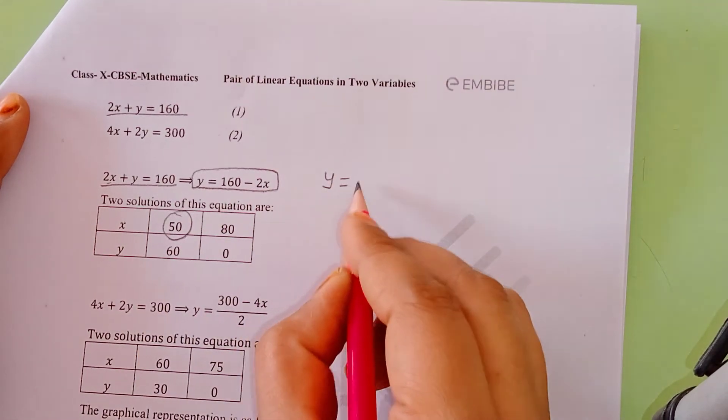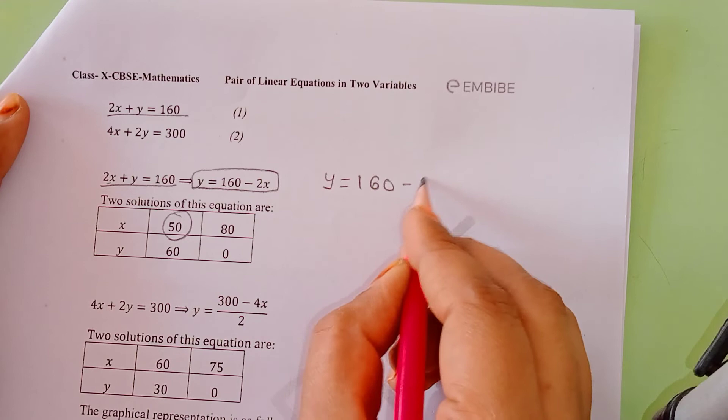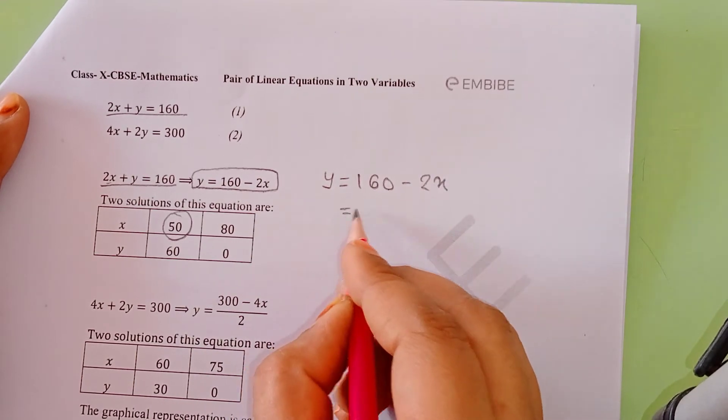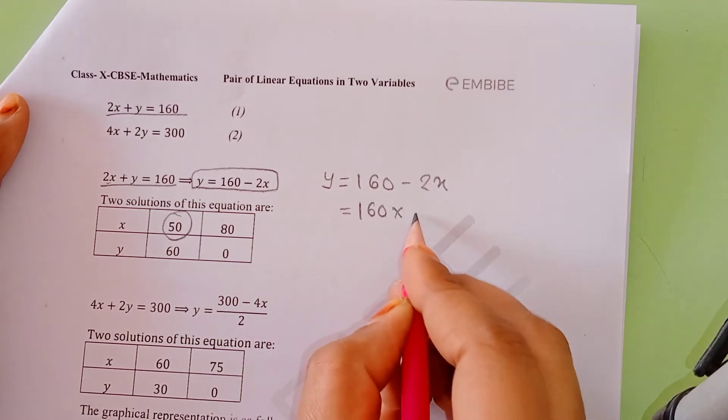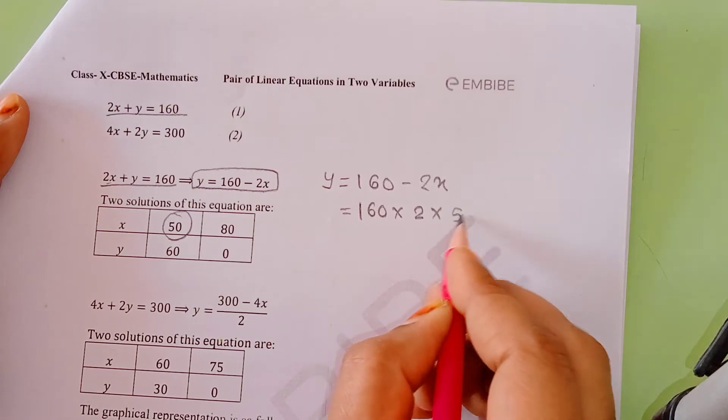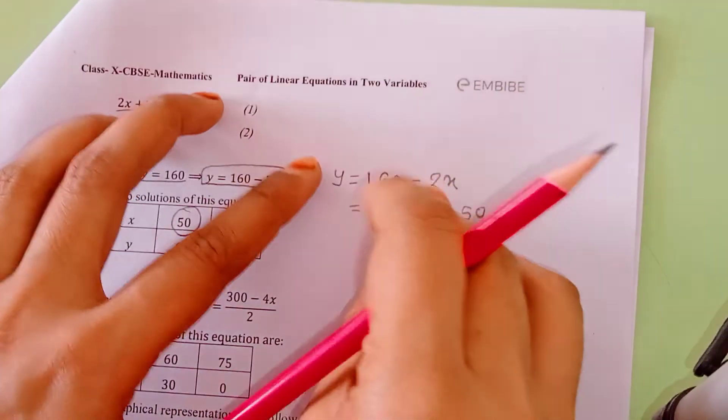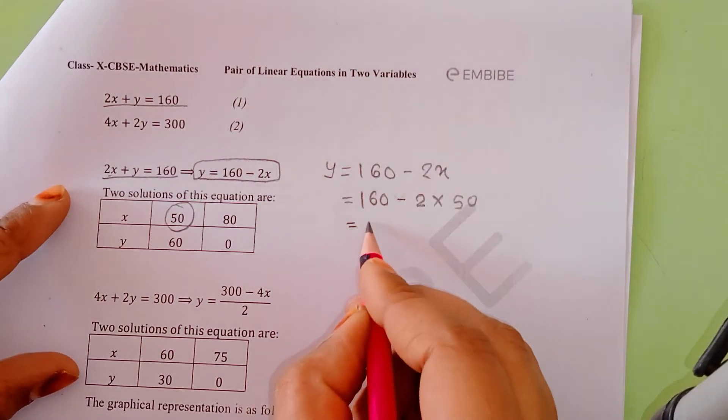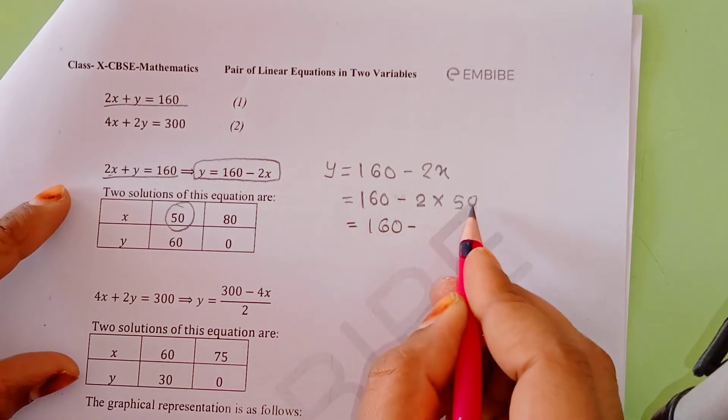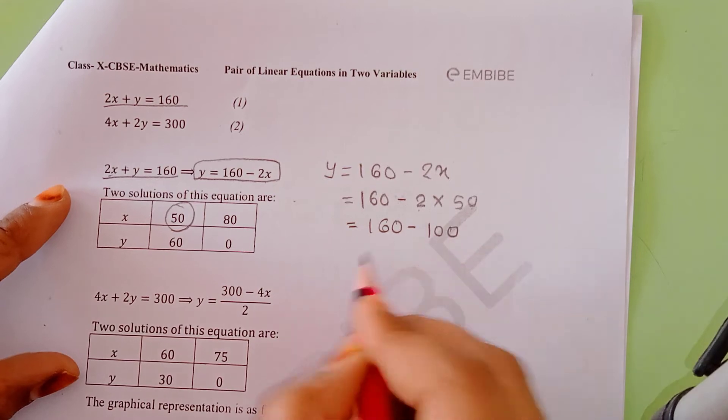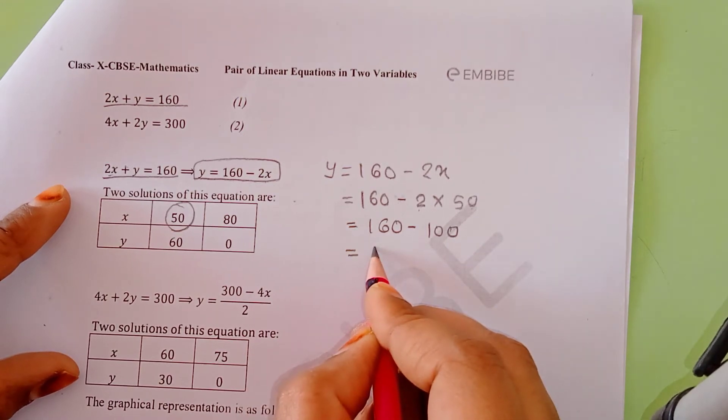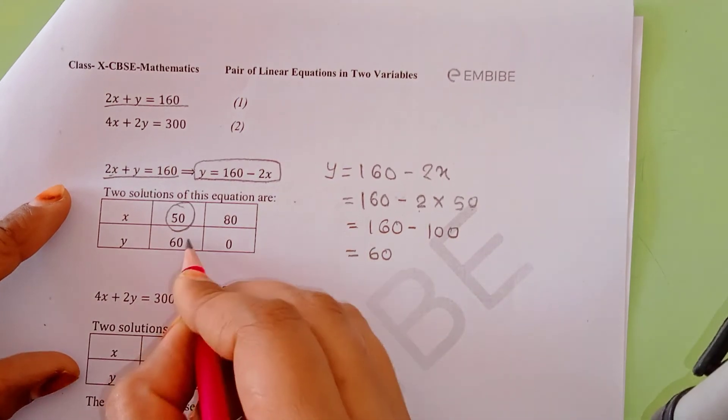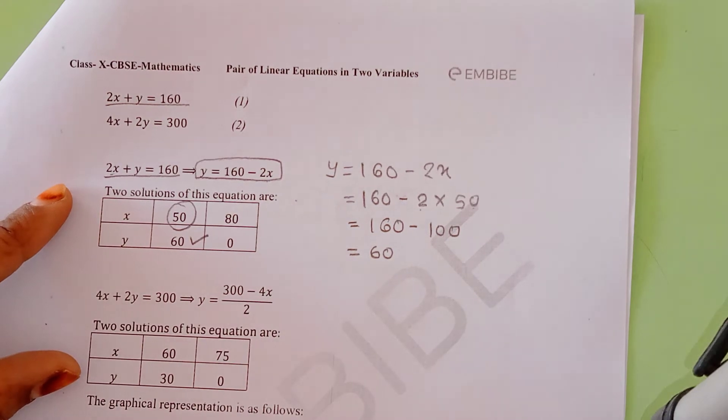If x value is 50, then y = 160 - 2(50) = 160 - 100 = 60. So the value of y is 60.